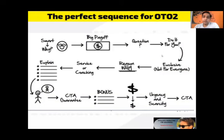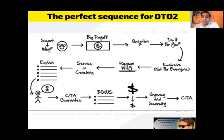Now we'll talk about the script. It will be similar to the OTO1 script. First, reconfirm the customer's decision — say something like: 'Thank you so much, and this is the last time I am offering something new. You are smart because you have already bought the product and gone through upsell page one. Now you are on upsell number two, the last page.' Appreciate them, call it a no-brainer offer, and ask: 'Do you want me to do this service for you?' Emphasize it is exclusive and available only to a small number of people.